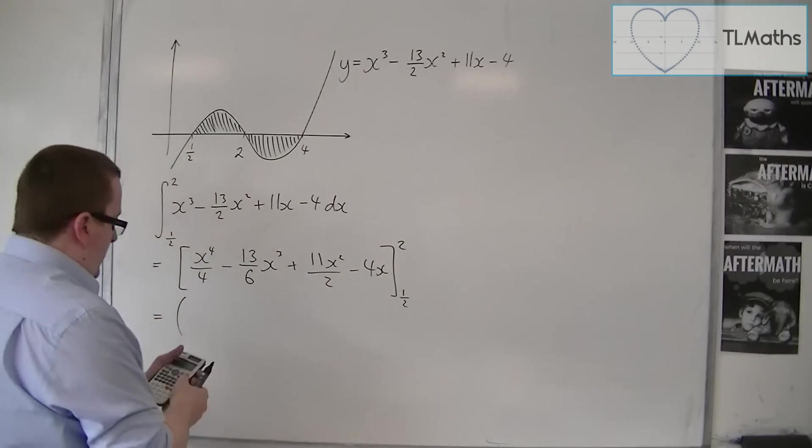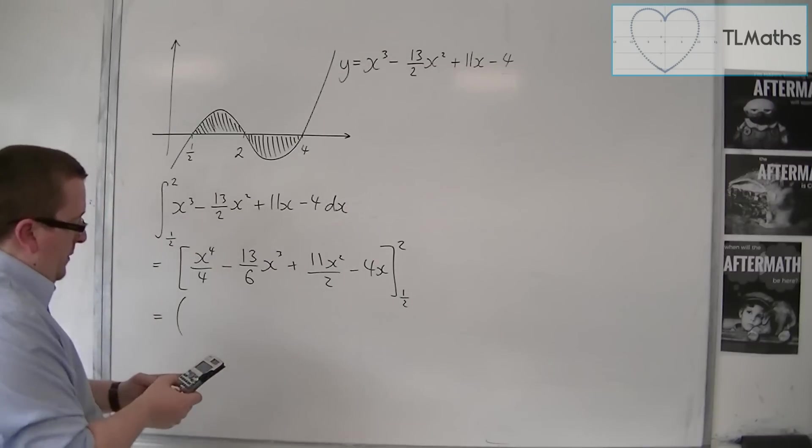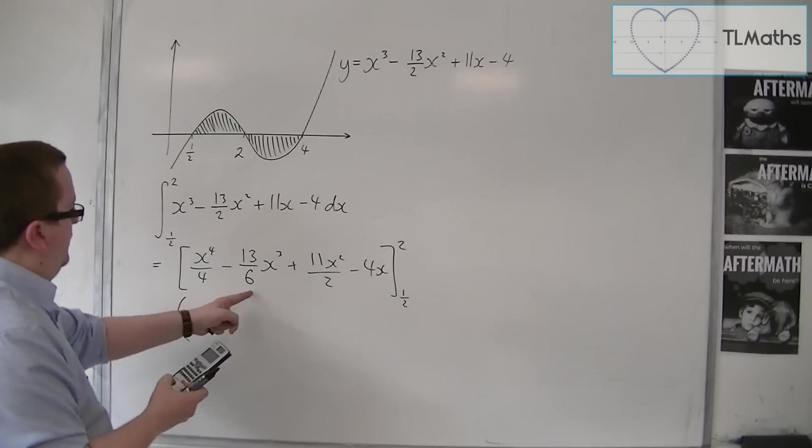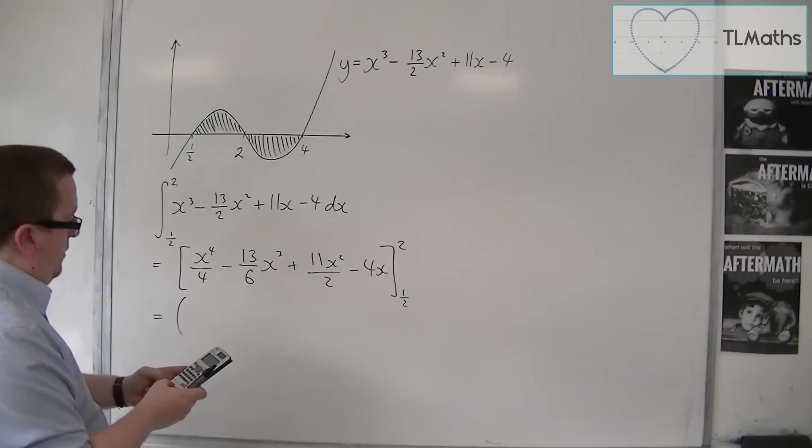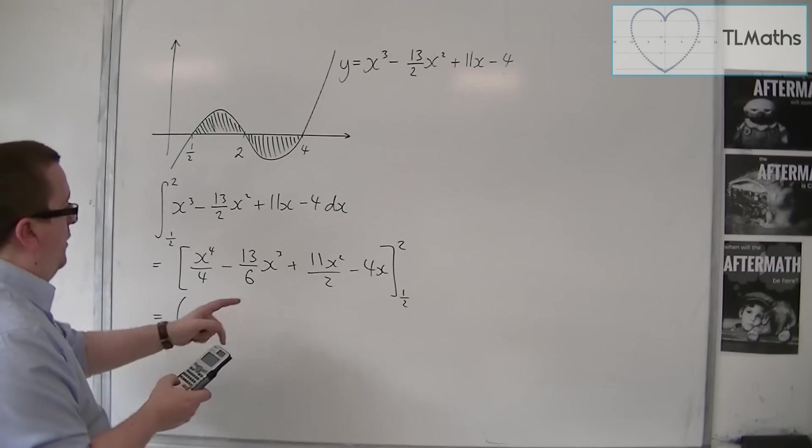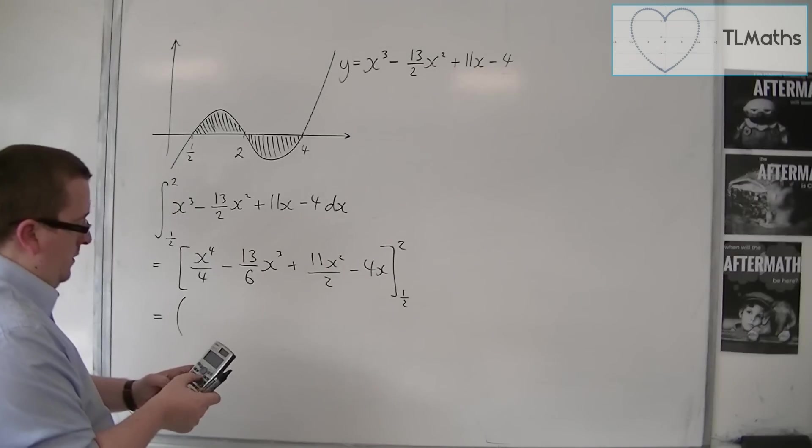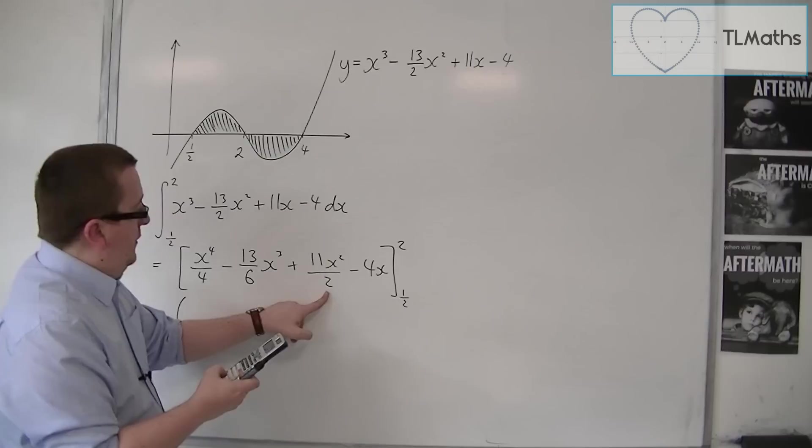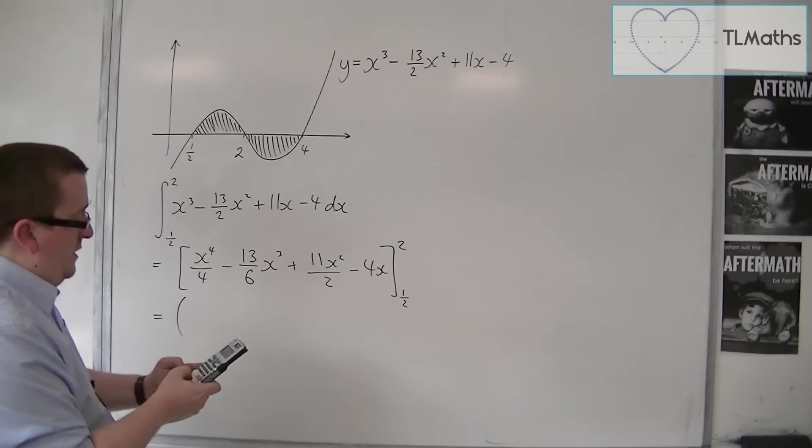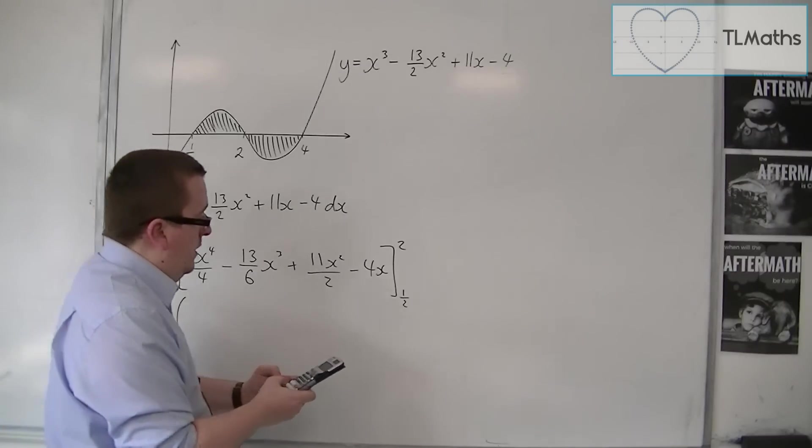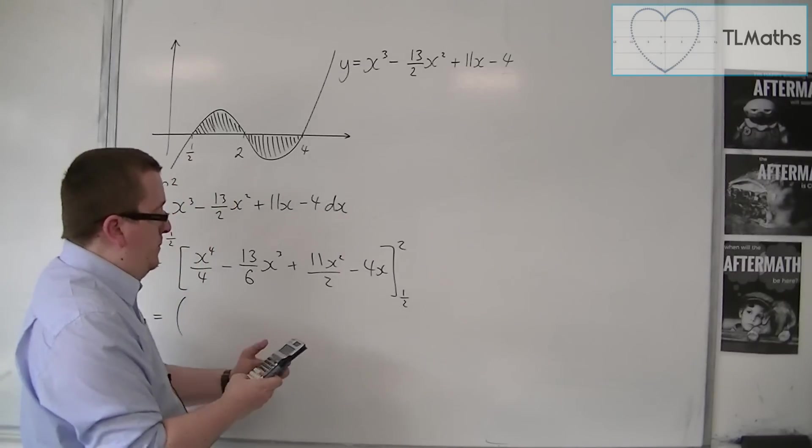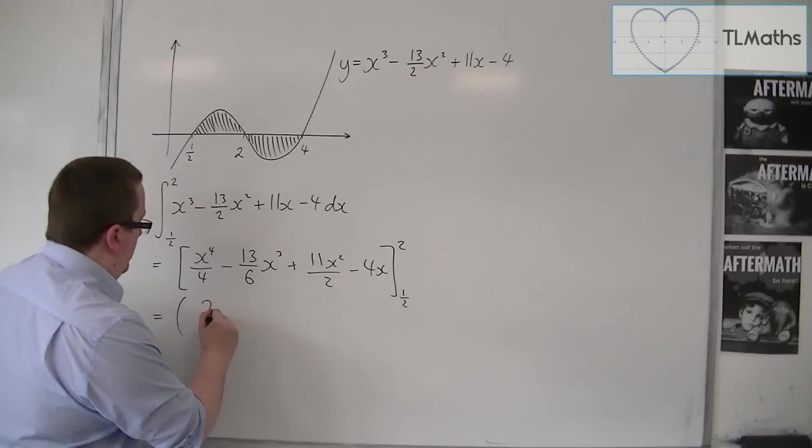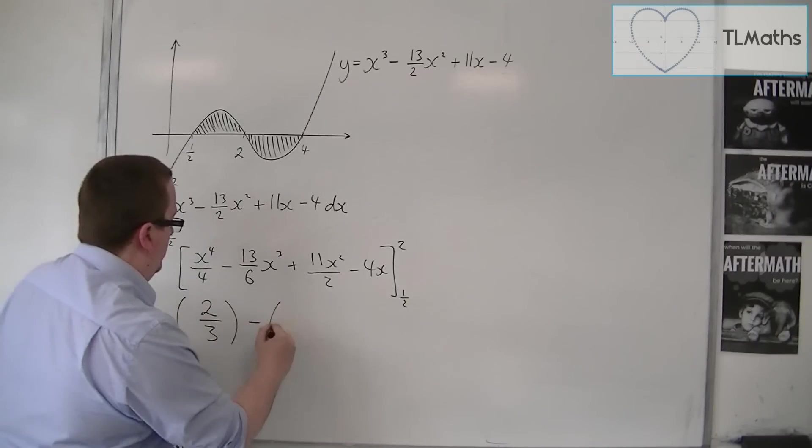So substituting in 2 first, so we're going to have 2⁴ divided by 4, take away 13 times 2³ divided by 6, plus 11 times 2² divided by 2, take away 4 times 2. So substituting in 2, and that gets me 2/3.